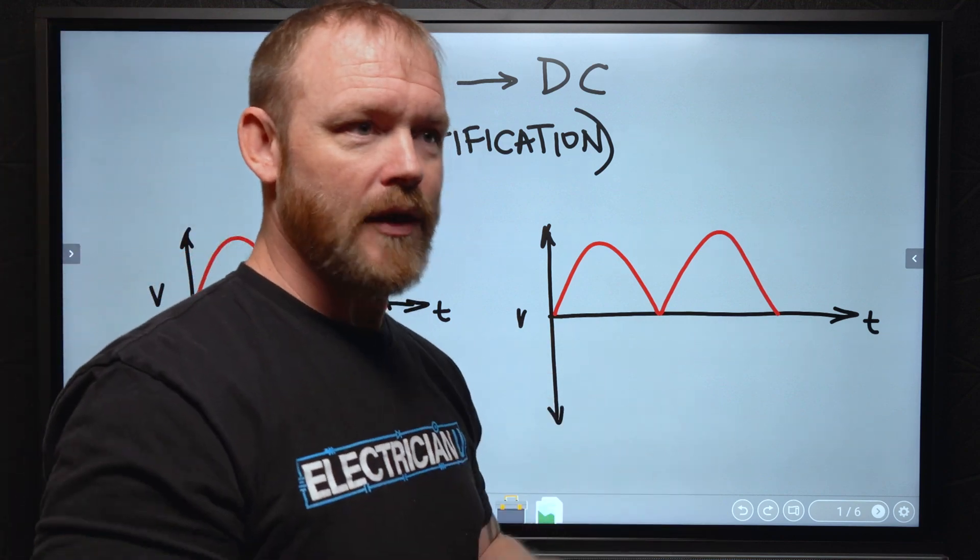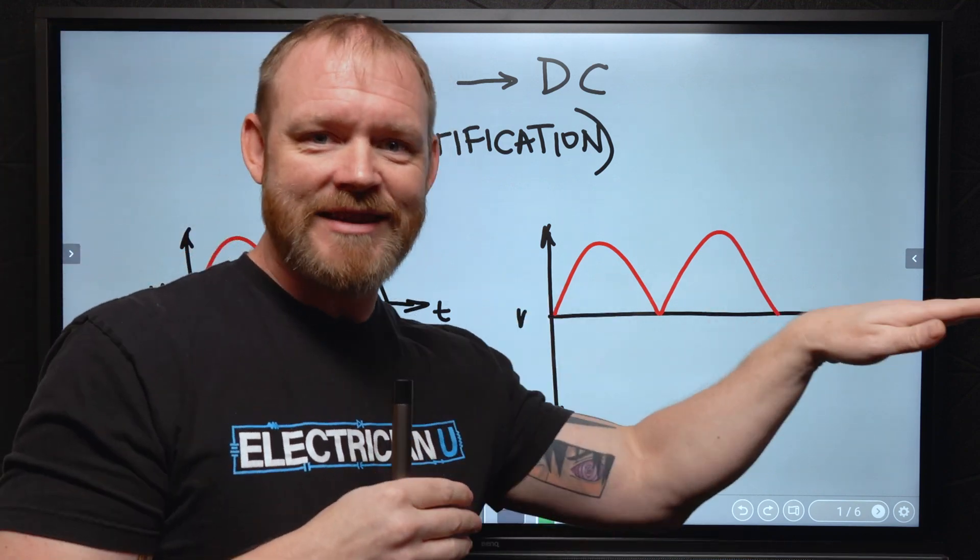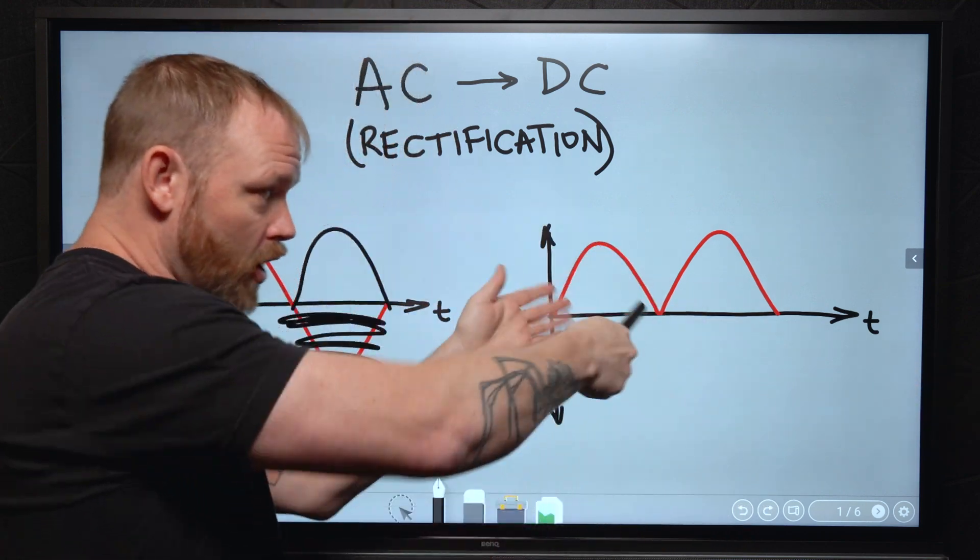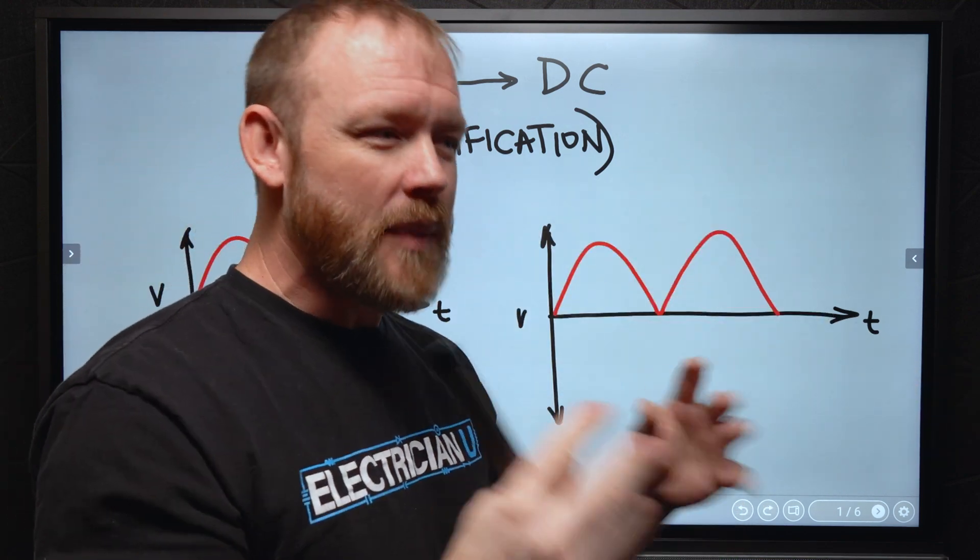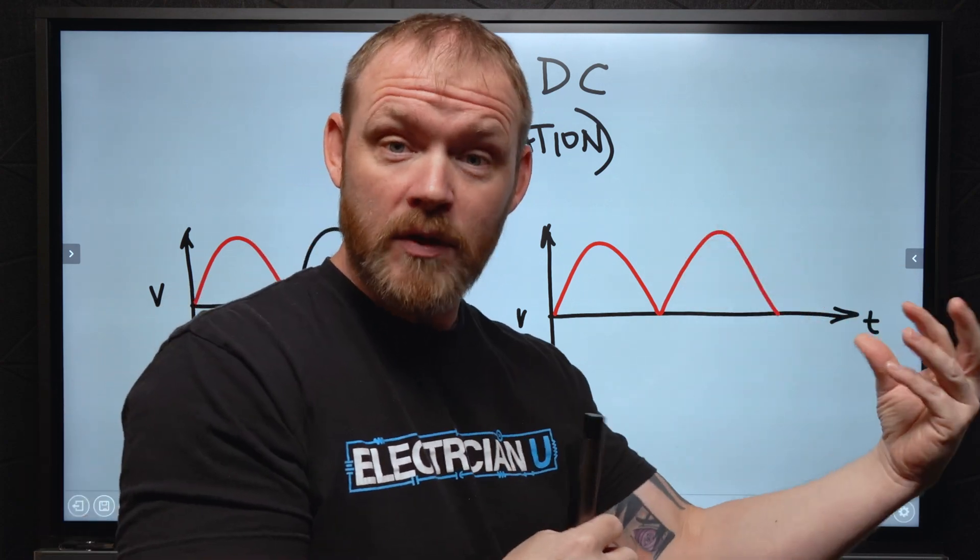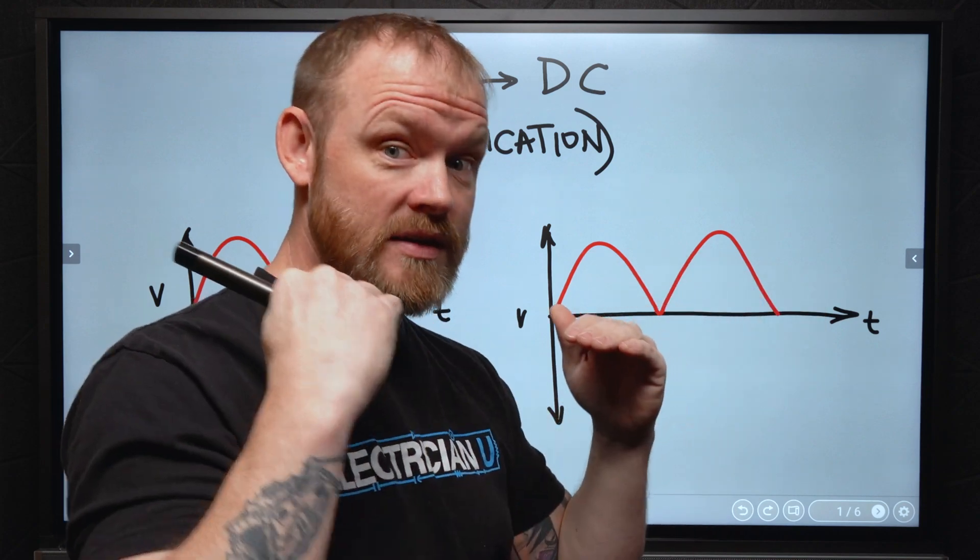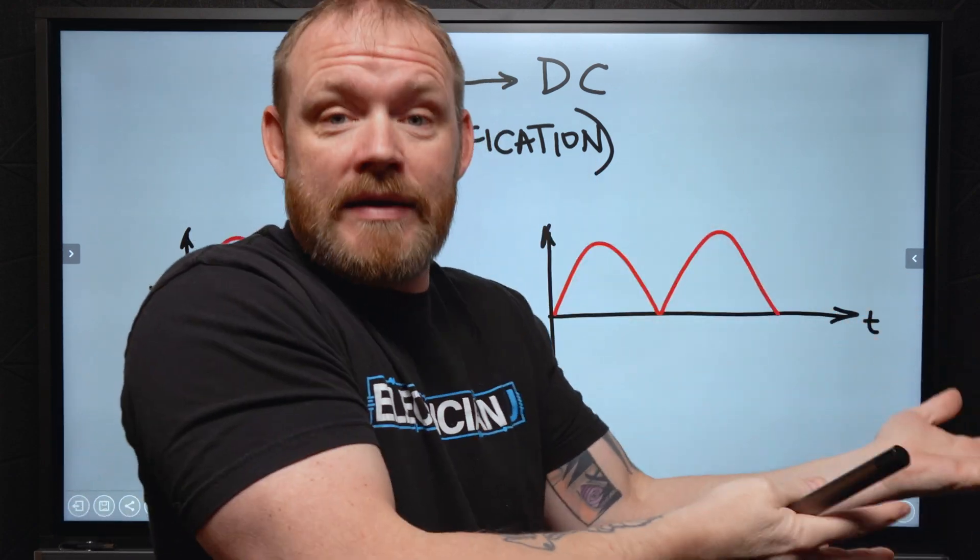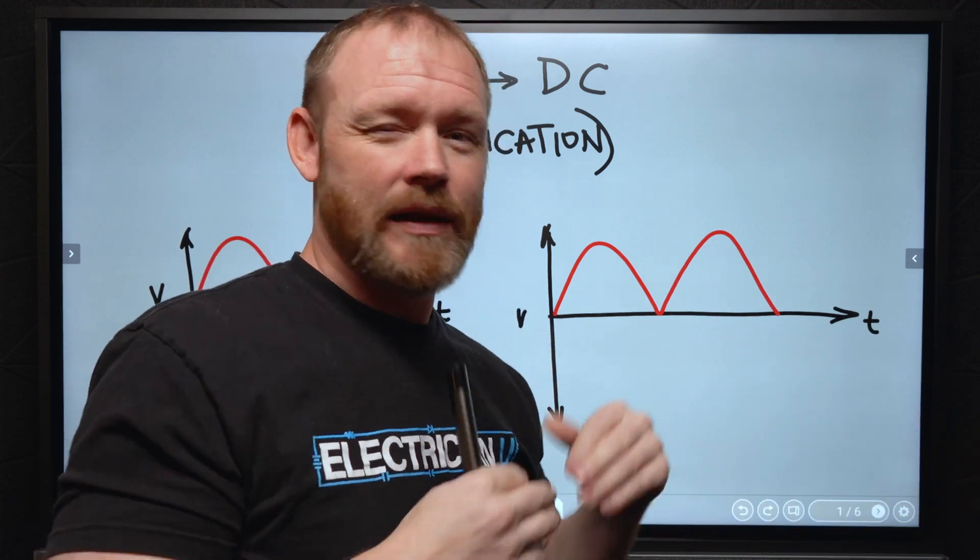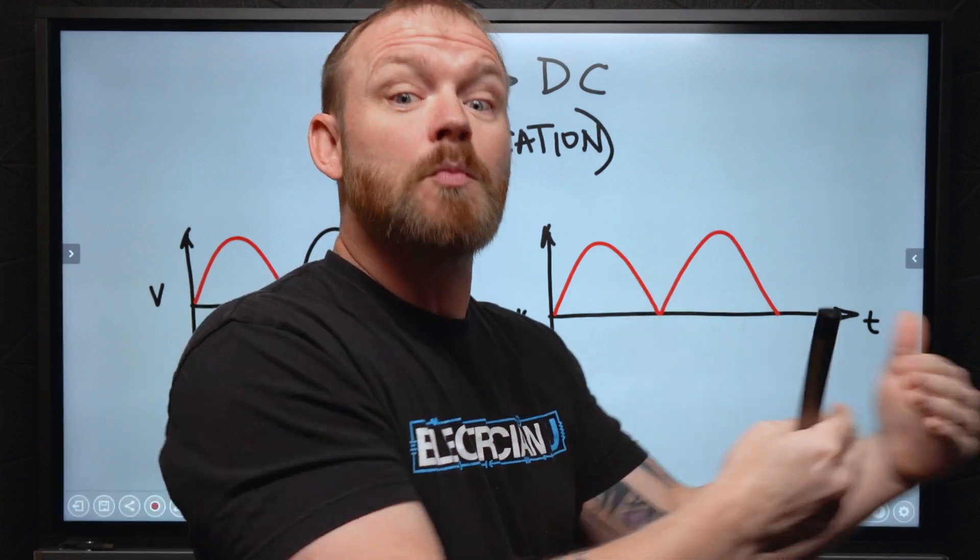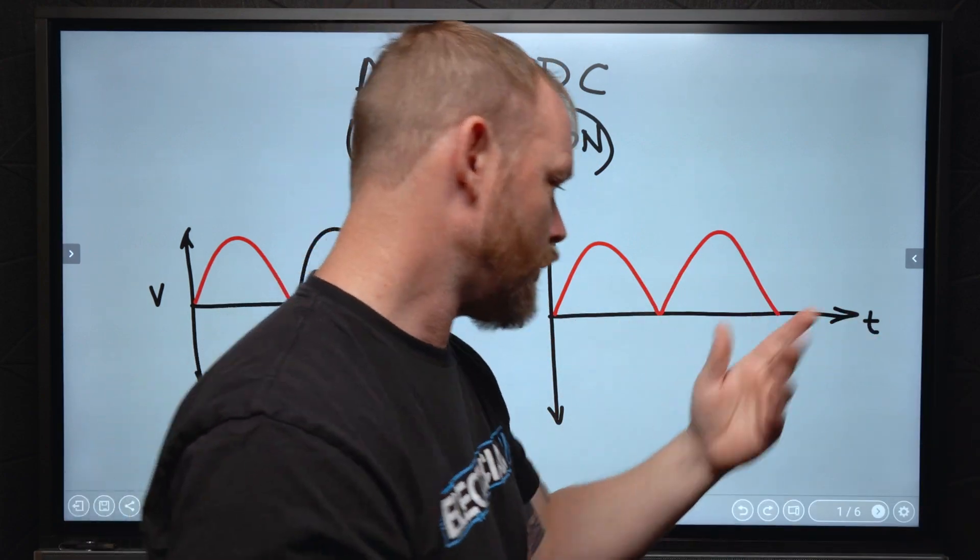A lot of people don't realize that. They think there's AC in and then there's just flat DC like a battery that comes out. That's not true. We always get a pulsing DC signal, but pulsing DC is not really useful for sensitive components and devices. They need a very smooth, clean DC signal. So we actually have to smooth out these ripples.